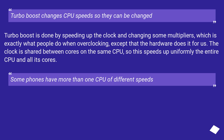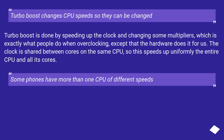Turbo Boost changes CPU speeds, so they can be changed. Turbo Boost is done by speeding up the clock and changing some multipliers, which is exactly what people do when overclocking, except that the hardware does it for us. The clock is shared between cores on the same CPU, so this speeds up uniformly the entire CPU and all its cores.